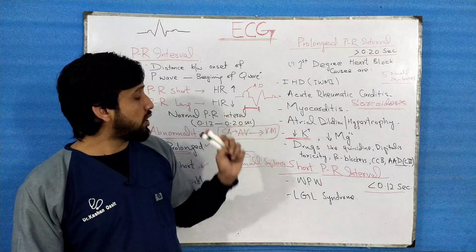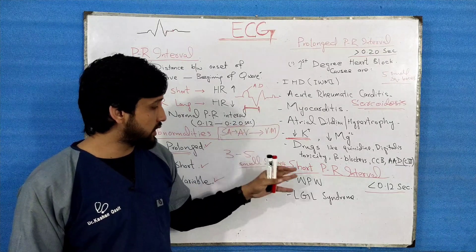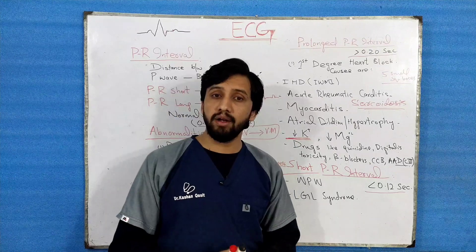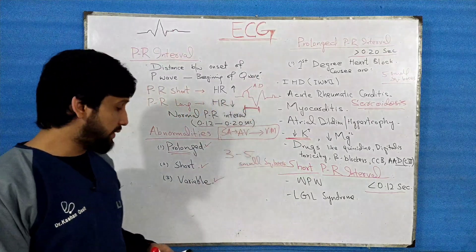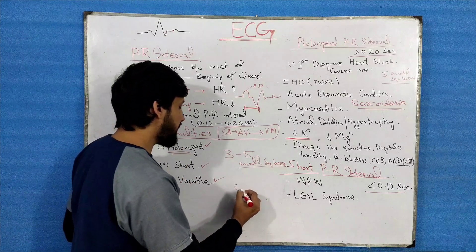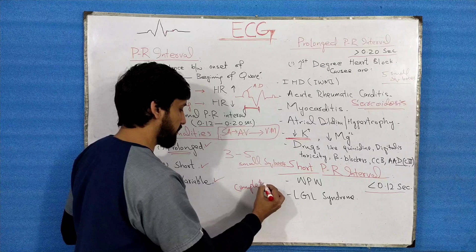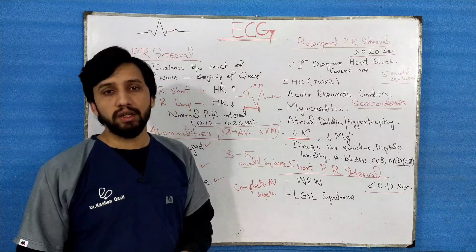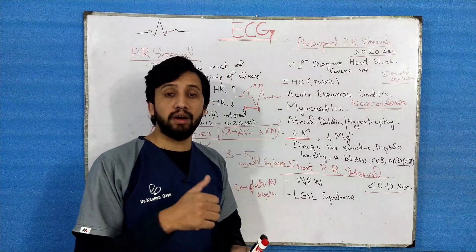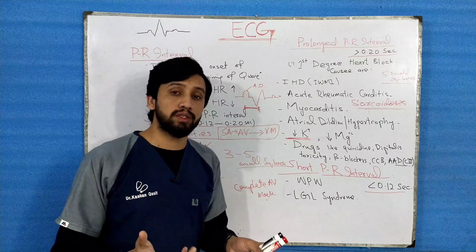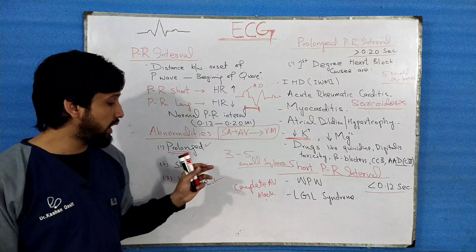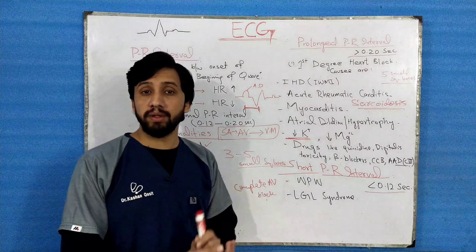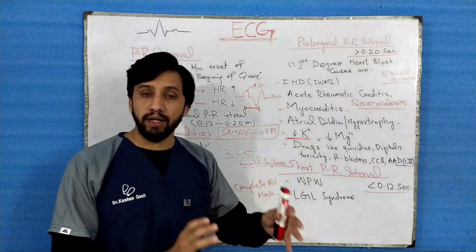Now we discuss the third abnormality, which is variable PR interval. Variable PR interval is seen in conditions like complete AV block and partial AV block. It is also seen in Mobitz Type 1 and Mobitz Type 2 phenomena, which are Wenckebach phenomena — second degree heart blocks. In all these conditions you will see a variable PR interval.